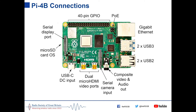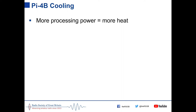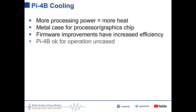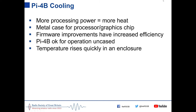Across the top is the 40-pin GPIO header, which has remained standard since the Model B Plus. It fits the same physical template and mounting hole positions as previous boards. As processing power increases, so does heat — the Pi 4 will run most tasks happily uncased, but inside an enclosure the temperature rises quickly. The processor starts throttling back at 85°C, so cooling needs to be considered for most applications.